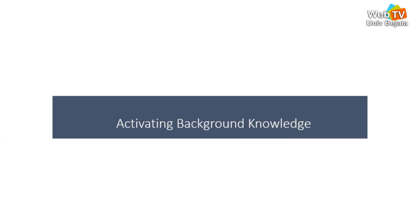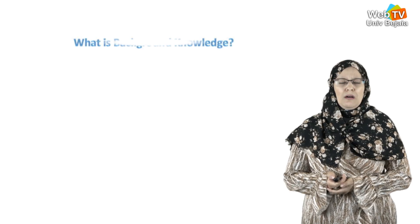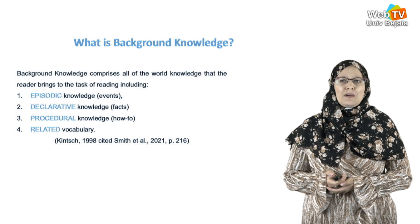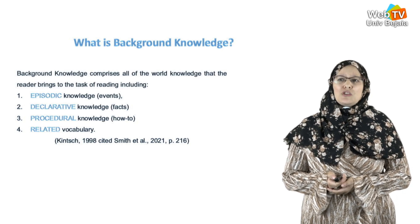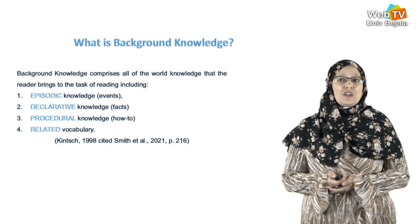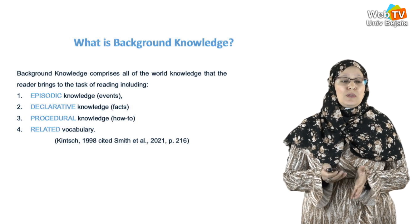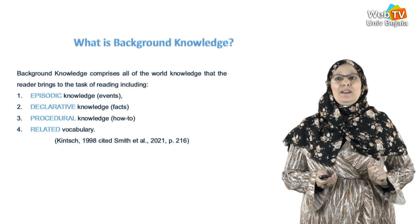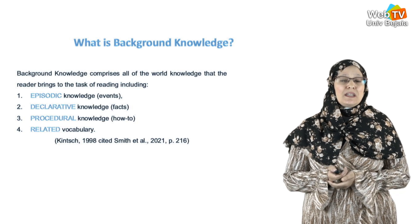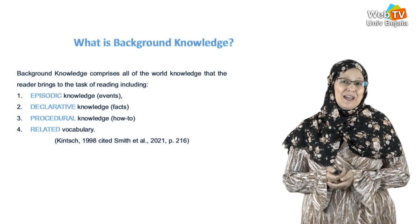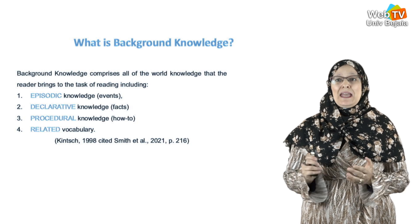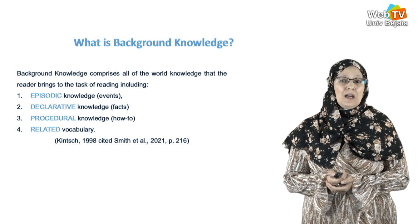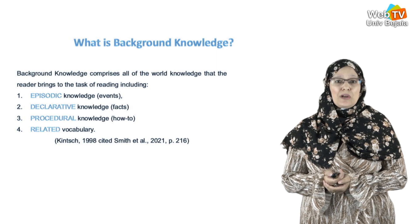Before doing so, the reader needs to activate background knowledge. But first, what does background knowledge mean? Background knowledge comprises all the word knowledge that a reader brings to the task. This includes episodic knowledge — meaning events; declarative knowledge — meaning facts; procedural knowledge — the how-to; and finally, related vocabulary. This is according to Quench, 1998.